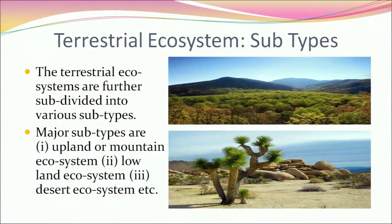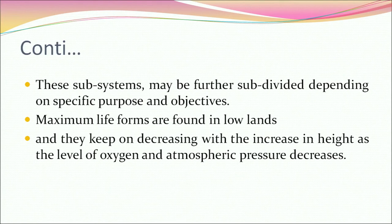Terrestrial ecosystems are further subdivided into various subtypes. Major subtypes are the alpine or mountain ecosystem, the lowland ecosystem and the desert ecosystem. These sub-ecosystems may be further subdivided depending on specific purpose and objectives. Maximum life forms are found in lowlands and keep decreasing with increasing height as the level of oxygen and atmospheric pressure decreases.